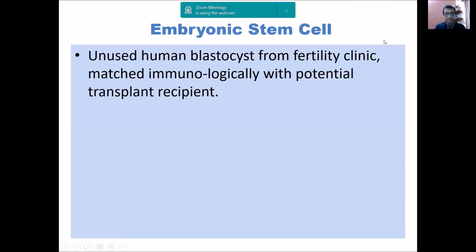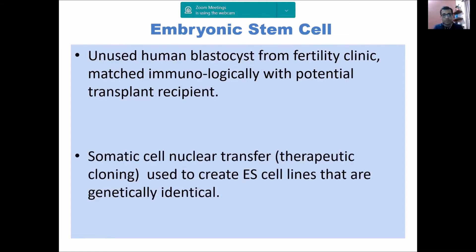Looking at each type: embryonic stem cells come from unused human blastocysts. When we take cells from the inner cell mass, it will not be from a viable embryo in a mother's womb — we get them from fertility clinics with in vitro fertilization. Multiple zygotes are formed and only some are implanted, so there are unused ones. From these, the inner cell mass can be taken out. For transplantation, immunological and tissue matching is obviously required.